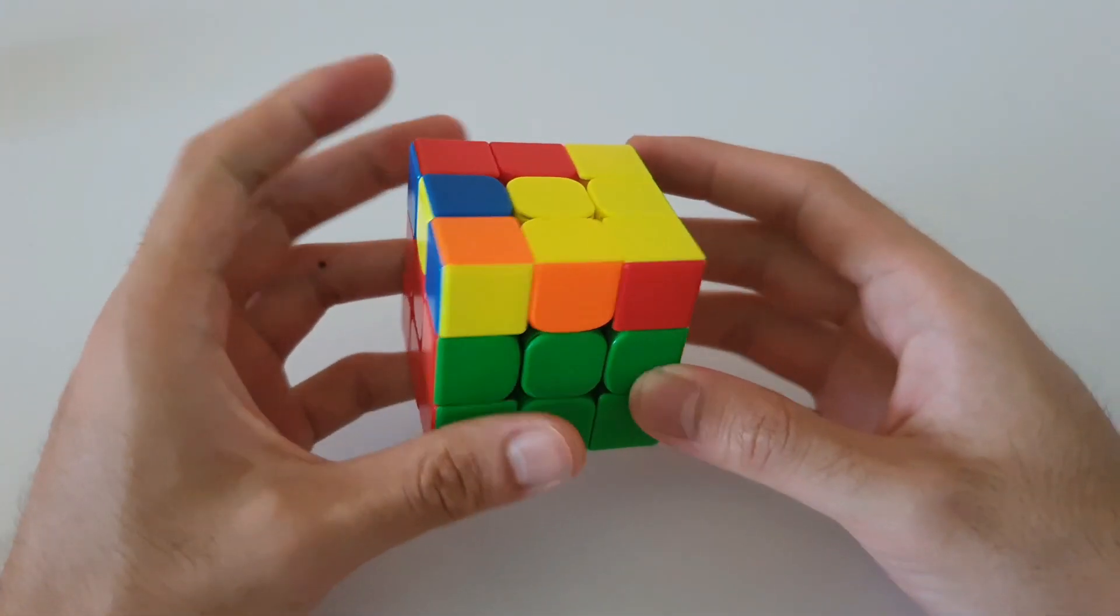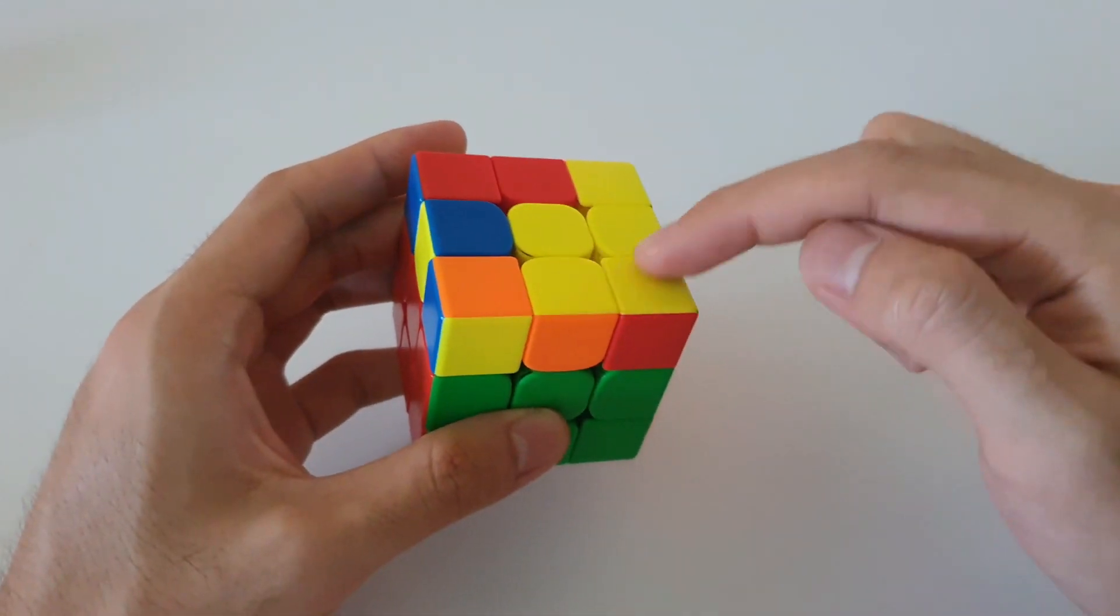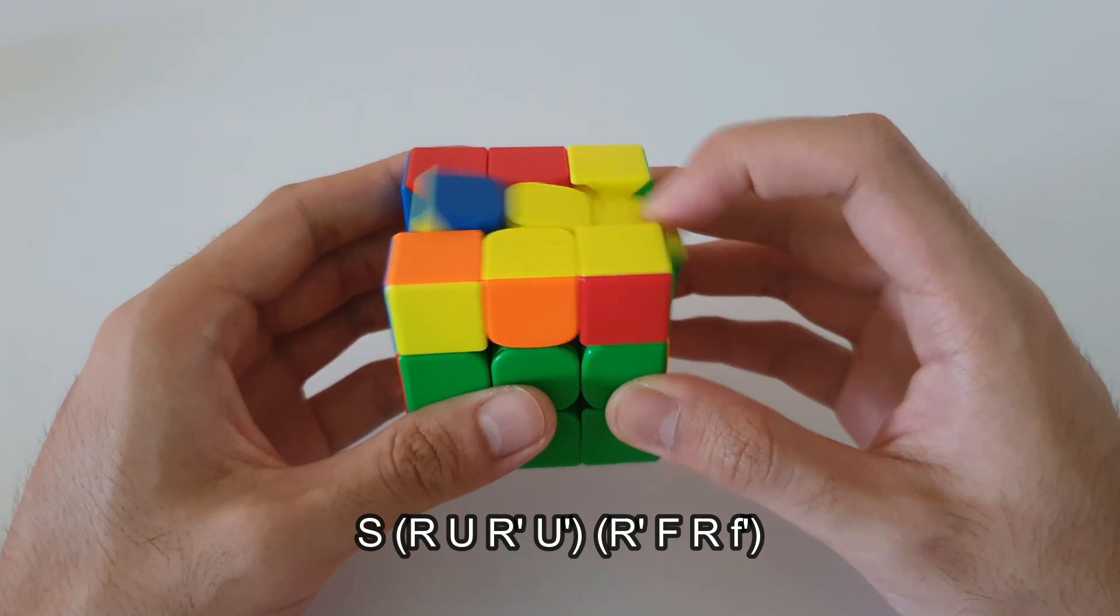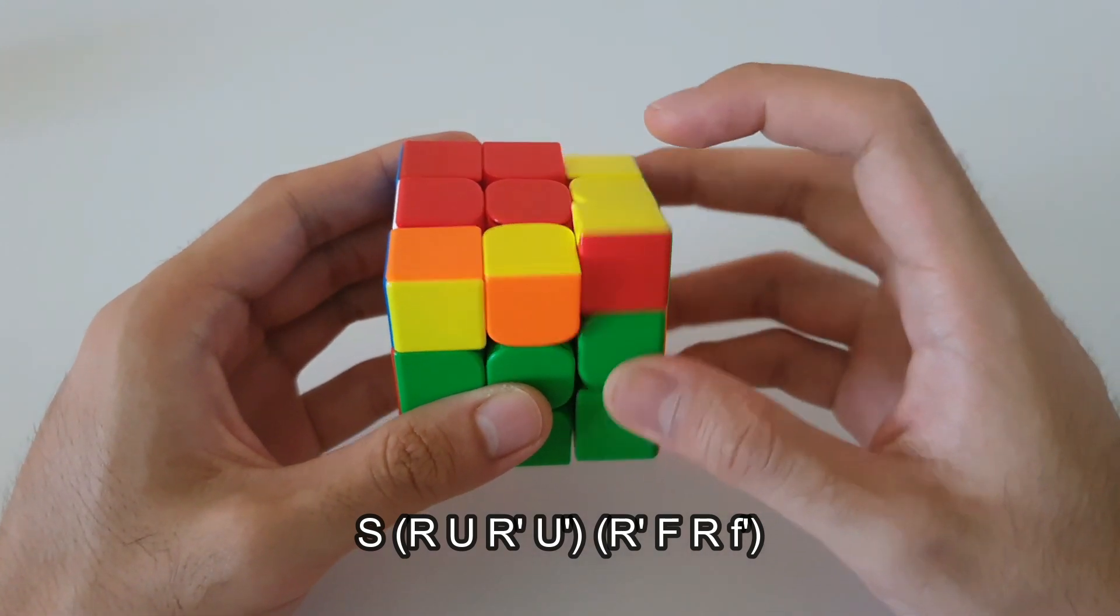So with this case you want to hold it, do a U2. So you want to hold the P upside down on the right side. Following that you want to do a slice layer move like this followed by a sexy on the right.